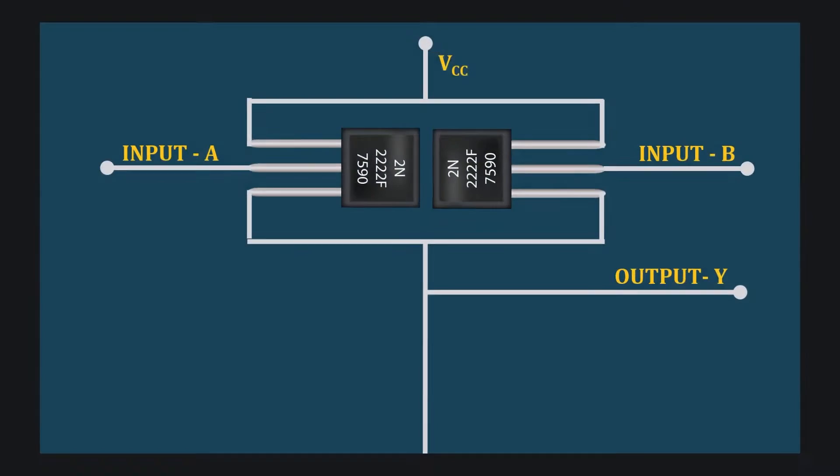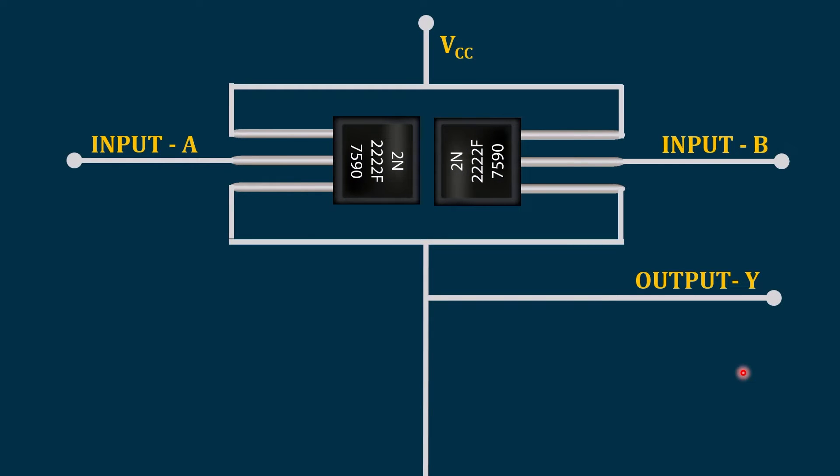Now we jump into the OR gate and understand what exactly is inside this gate and how it functions. It is like two transistors connected in parallel.